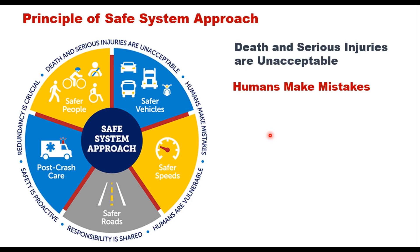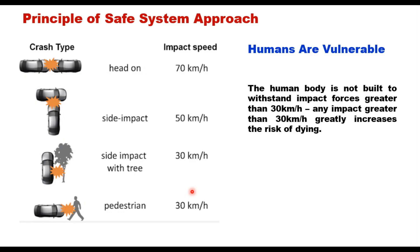The third principle is that humans are vulnerable. Human bodies have physical limits for tolerating crash forces before death or serious injury occurs. The human body is not built to withstand impact forces greater than 30 km/h, and therefore any impact greater than 30 km/h greatly increases the risk of dying. For example, a head-on crash between two cars results in an impact speed of 70 km/h, and a side impact at 50 km/h — therefore it is critical to design and operate a transportation system that is human-centric.